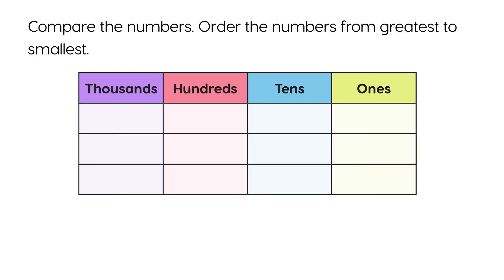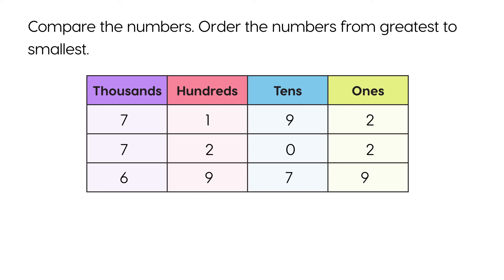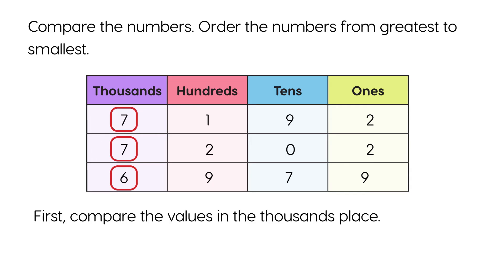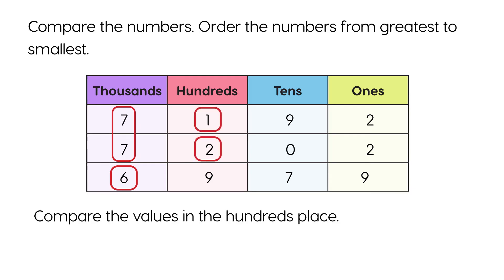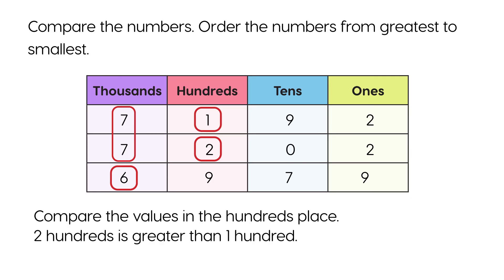Compare the numbers in the place value chart. Order the numbers from the greatest to the smallest. First, compare the values in the thousands place. Seven thousands is greater than six thousands. So, six thousand nine hundred seventy-nine is the smallest number. Compare the values in the hundreds place. Two hundreds is greater than one hundred. So, seven thousand two hundred two is the greatest number.